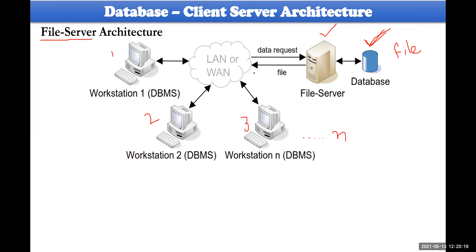The fundamental problem with file server architecture is this: suppose a query is written — 'SELECT name FROM customer and order WHERE some condition' — requiring only one particular person's information. The file server sends the complete files for both the customer and order tables. The workstation must then run one more query locally to extract the relevant result.